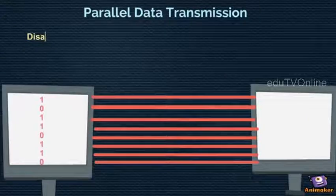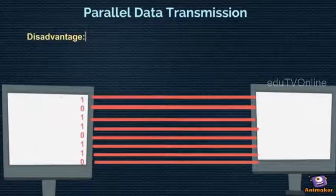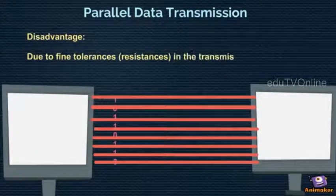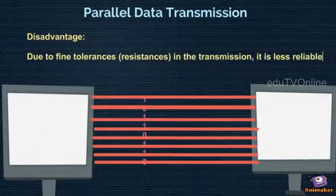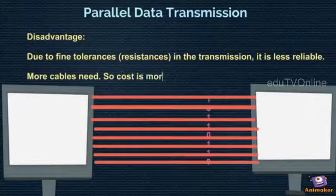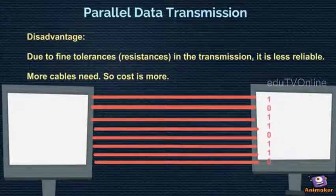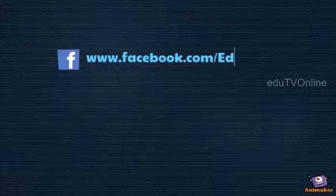Parallel data transmission is less reliable. Due to fine tolerance in transmission, data may be lost. And the cost of wiring is more because it uses more cables.